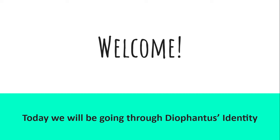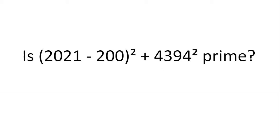Welcome. Today we will be going through Diophantus' identity. First, I have a question: is 2021 minus 200 squared plus 4394 squared prime? Hopefully by the end of the video you will know how to work this out.